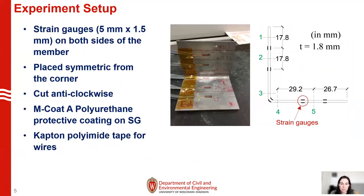We measured the residual stresses on an edge piece number one and a center piece number four. We installed strain gauges on our specimen. The measuring area is 5 millimeters by 1.5 millimeters on both sides — inner and outer — of the member. The strain gauges are placed symmetric from the corner and they are cut anti-clockwise. From the diagram on the right, the green lines are the cut lines — one, two, three, four, and five. The black bars represent our strain gauges at various locations on both inner and outer surfaces. To protect our strain gauges during sectioning, we used an M-Coat-A polyurethane protective coating on the strain gauge and polyamide tape for the wires.